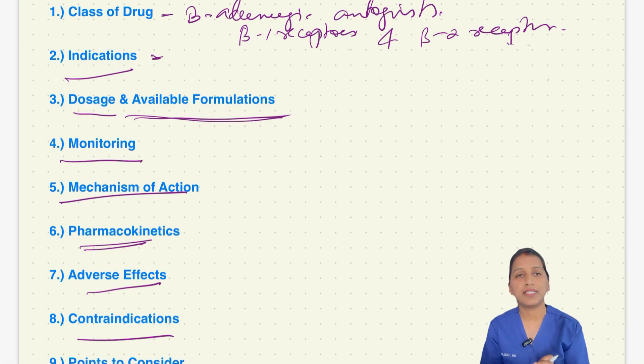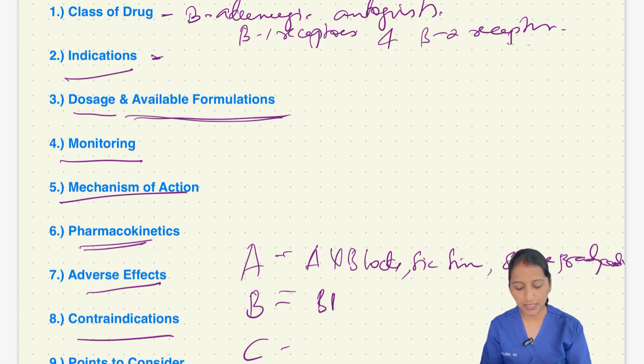Next, coming to contraindications. Let us remember the contraindications as ABC wherein A stands for AV blocks, sick sinus syndrome and severe bradycardia. B stands for bronchial asthma that is uncontrolled bronchial asthma. C stands for congestive or decompensated heart failure and acute cardiogenic shock. So, these are the contraindications to use of metaprolol.